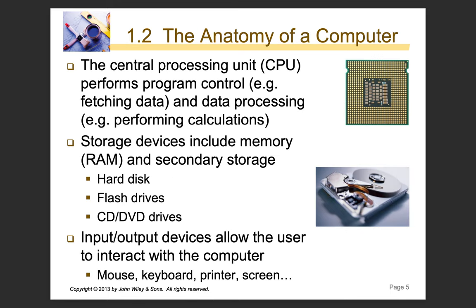The anatomy of a computer — we'll start off with the central processing unit, otherwise known as the CPU. This performs program control: fetching data, data processing, and performing calculations. Your program will be run using something called a fetch, decode, execute cycle, and that's all controlled by the CPU.